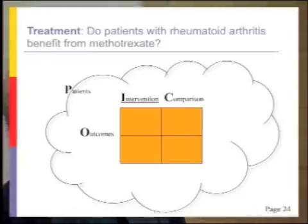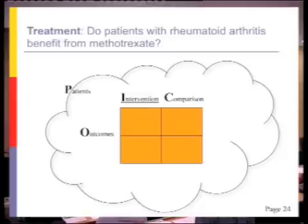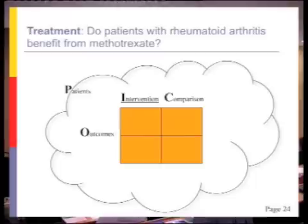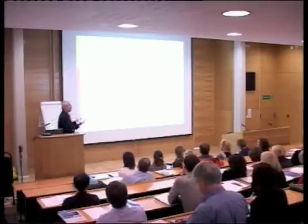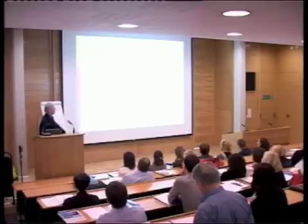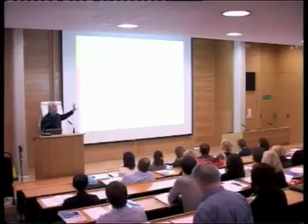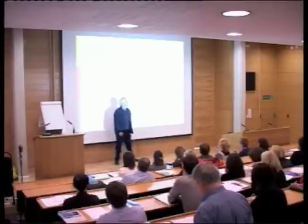A treatment question might be: do patients with rheumatoid arthritis benefit from methotrexate? The population is rheumatoid arthritis, the intervention is methotrexate, the comparator is no methotrexate, and the outcomes include pain, fatigue, dysfunction — all the things we said we want to measure. It may reduce pain but not change the incidence of fatigue or flu-like episodes, and that would be of interest to patients. Here we'd probably want a randomised trial as our best evidence — patients randomised to methotrexate or no methotrexate.